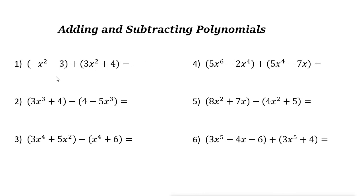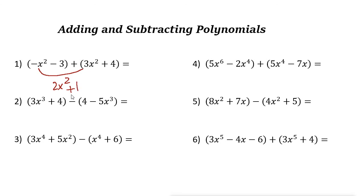The first example is negative x squared minus 3 plus 3x squared plus 4. We have two polynomials with like terms — they share the same variable x and the same power 2, so we can combine them. Negative x squared plus 3x squared is 2x squared, and negative 3 plus 4 is plus 1. That's the answer.